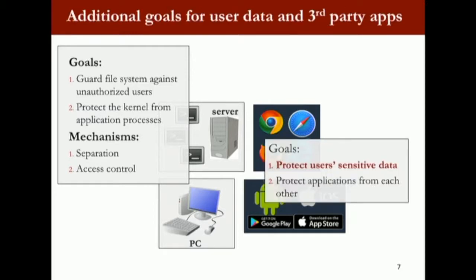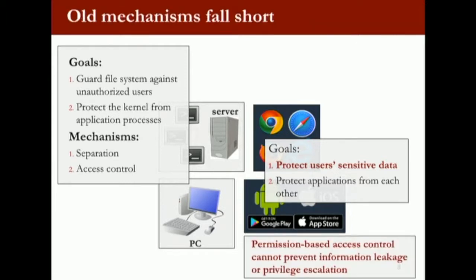In these newer systems there are new goals — a lot of users' private information is flowing through the platform. As I'm typing my credit card into the browser, that credit number is flowing around in the system and eventually goes out. We have an additional goal to actually protect this kind of user-sensitive data. It's also very easy to install third-party applications — potentially malicious ones. We also want to protect applications from each other, since mutually distrusted applications can be installed on the same platform. In Android, they're still using permission-based systems. However, the permission-based system is not enough to prevent information leakage or privilege escalation.